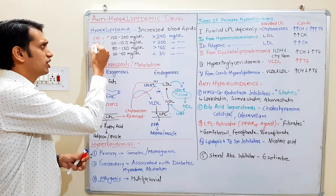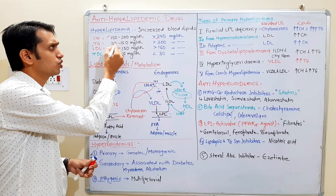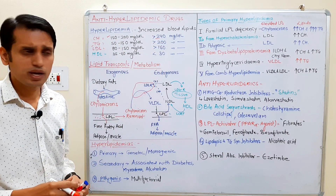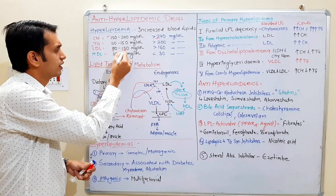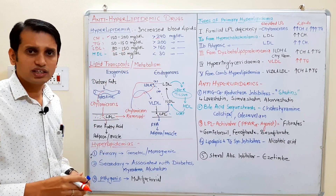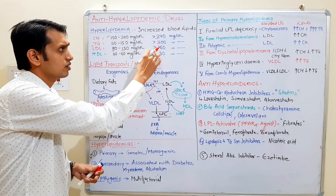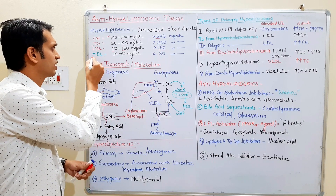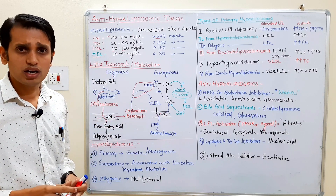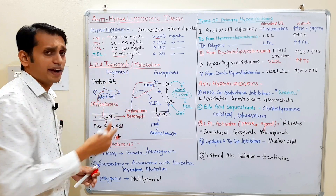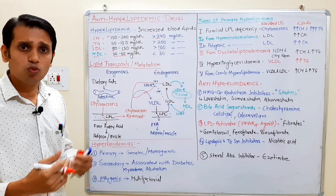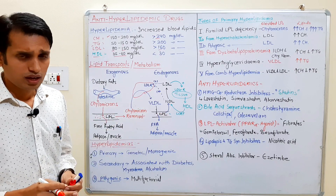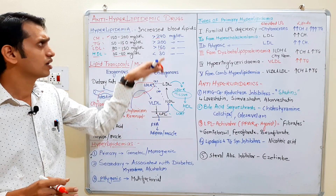For triglycerides (TG), the normal range is 50–150 mg per deciliter, and more than 200 mg per deciliter is a risk for hyperlipidemia. For LDL, the normal range is 80–150 mg per deciliter, and more than 160 mg per deciliter is a risk. For HDL, the range is 35–60 mg per deciliter, and less than 30 mg per deciliter is a risk for various serious diseases or hyperlipidemia.